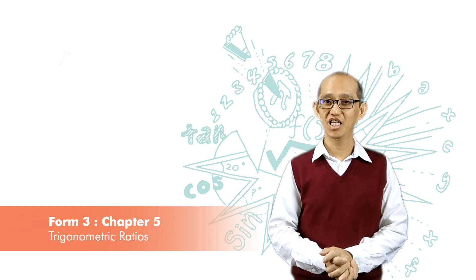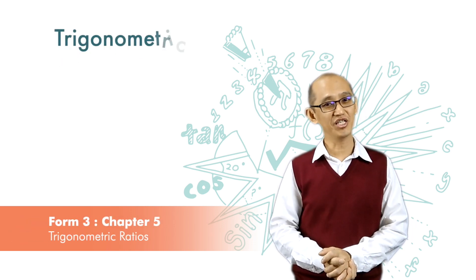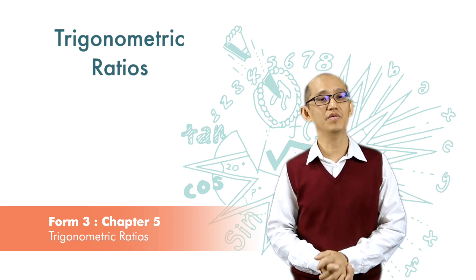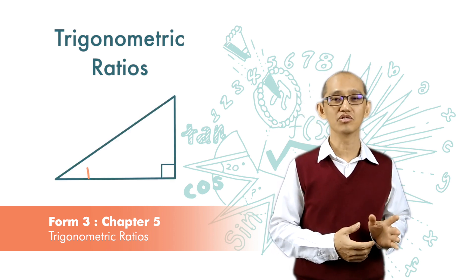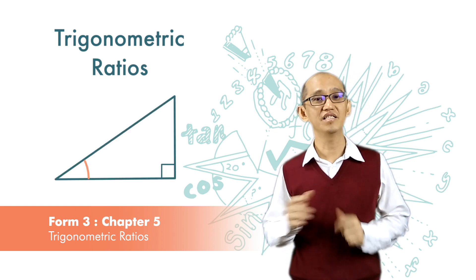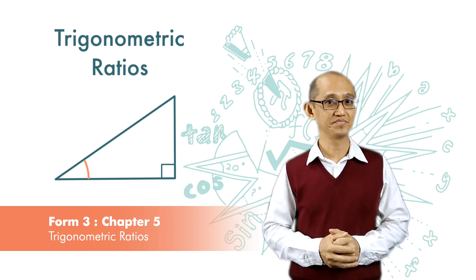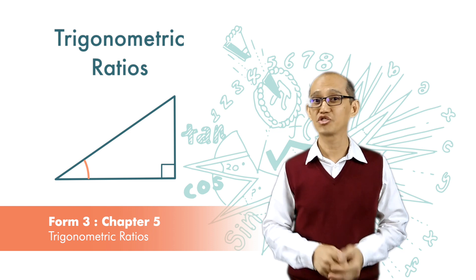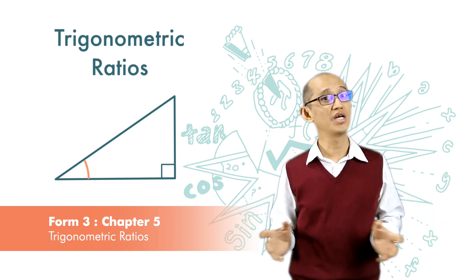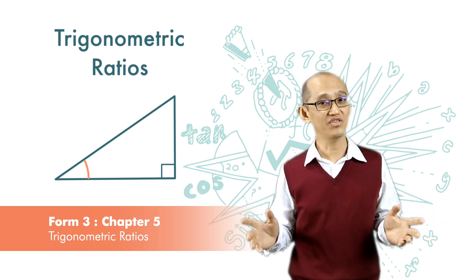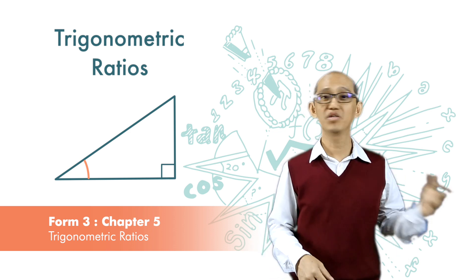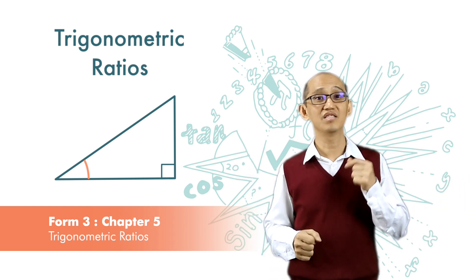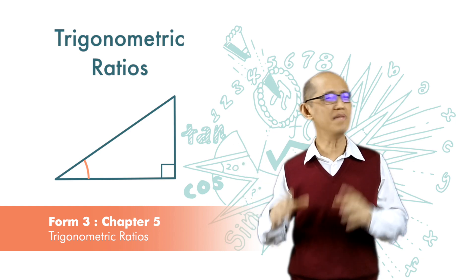Today we are going to learn trigonometric ratios. Trigonometry is about the relationship between the angle and the sides in a right angle triangle. It is a very important topic because there are so many things to do with angles and length in this world — from buildings to mountains, even the sun, the stars, and many more.